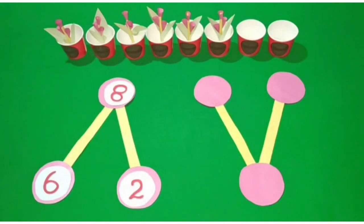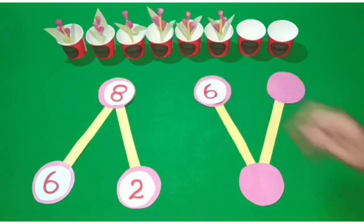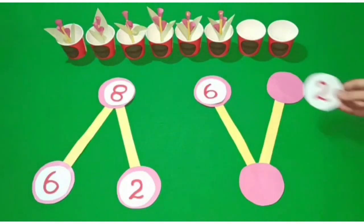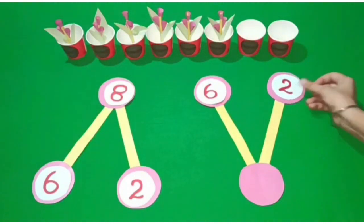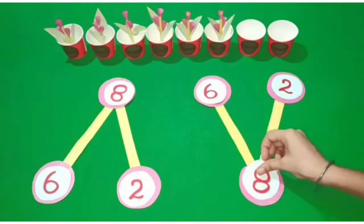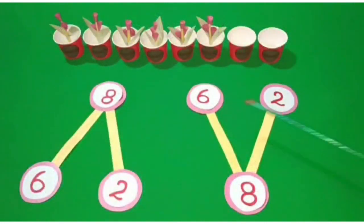There are flowers in 6 pots and no flowers in 2 pots. See, how many pots are there in all? Very good — there are 8 pots. 6 and 2 are 8 in all.